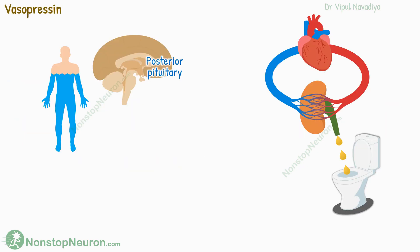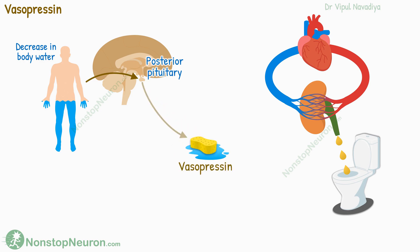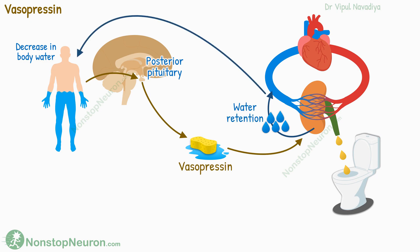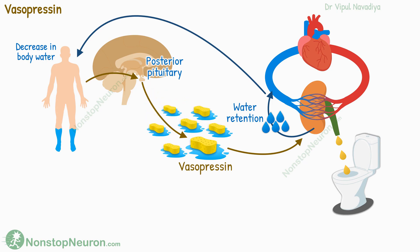Next is vasopressin. It is secreted from the posterior pituitary when plasma osmolarity increases, or in simple words, when body water is decreasing. Its main job is the retention of water during urine formation to restore the water level in the body. At concentrations seen in most physiological conditions, it does not produce much effect on blood vessels. But in extreme conditions like hemorrhagic shock, it is secreted in large quantities, causing vasoconstriction which contributes to a transient increase in blood pressure.